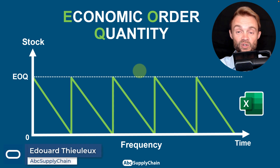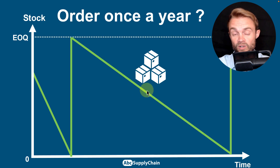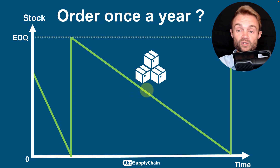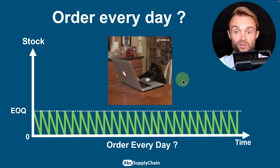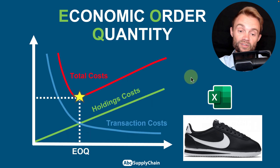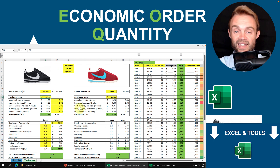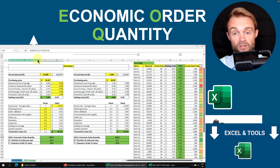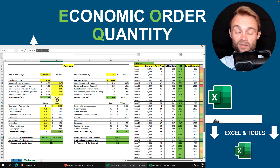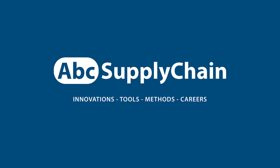Hello, this is Edouard and in today's video we're going to talk about the EOQ, the economic order quantity. I'm going to explain how to optimize the quantity you want to order and also the frequency. Do you need to order once a year but hold way too much stock, or order every day like a very cute cat, which will be exhausting and cost a lot in transaction costs? I'll help you find the perfect balance, with a specific Nike shoes example in Excel.